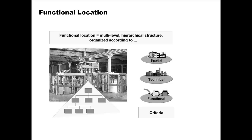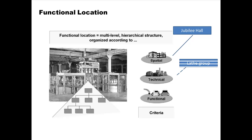To extend the Jubilee Hall example: there's a lot of equipment in various classrooms — projectors, DVD players, and screen mechanisms. If this were a plant requiring plant maintenance, we would need to know the location of each piece of equipment. The functional location helps identify where each equipment is located, and the serial number helps identify which specific individual projector we are talking about.